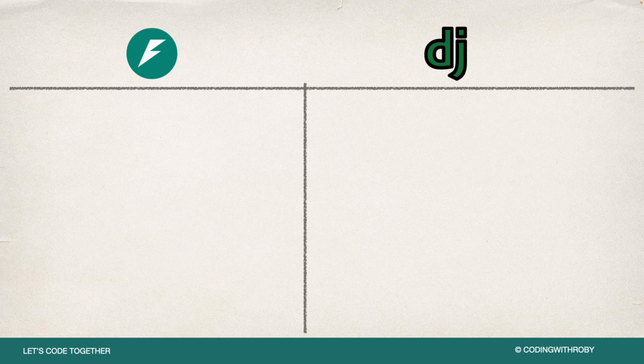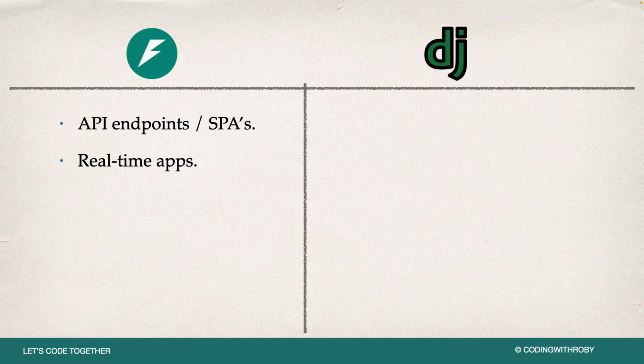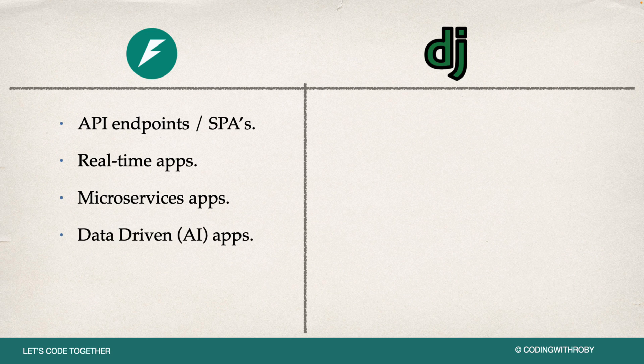FastAPI is known for API endpoints and being able to create back-end applications for SPA applications, which includes React, Angular, Vue, Next.js, and a whole bunch of others. It's really good at real-time applications using web sockets and some other functionality. It's a top choice for creating microservices using Python, and it's used in a lot of data-driven apps, such as AI applications or implementing ChatGPT or Gemini inside your application. FastAPI is a great choice for those types of applications.